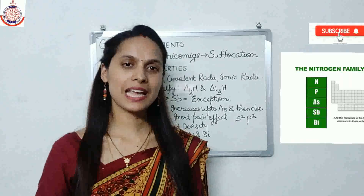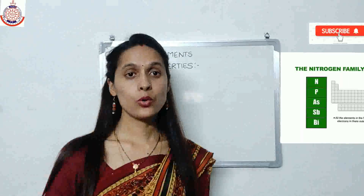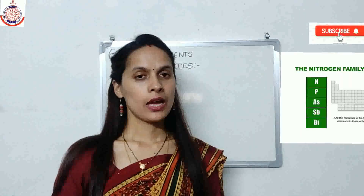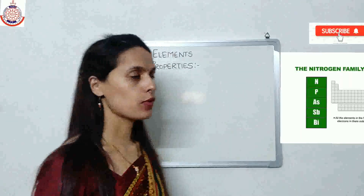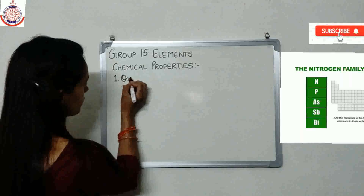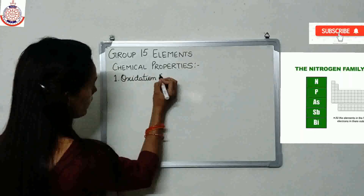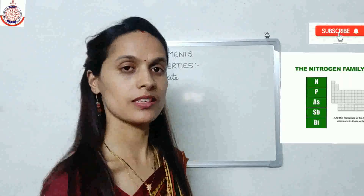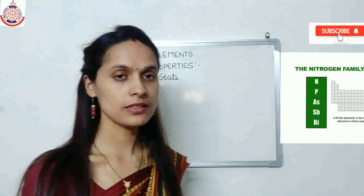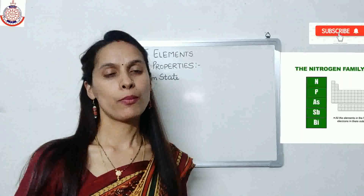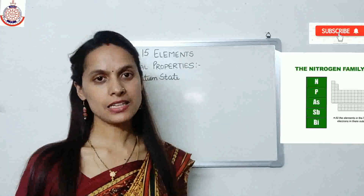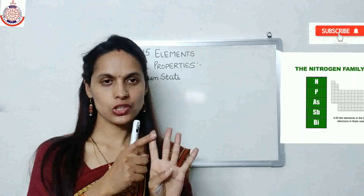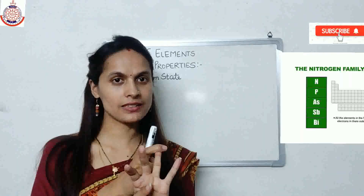Now we will study the chemical properties of Group 15 elements, starting with oxidation states. We will cover this topic in four sub-topics: negative oxidation state, positive oxidation state, covalency, and disproportionation.